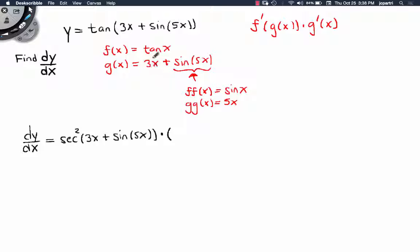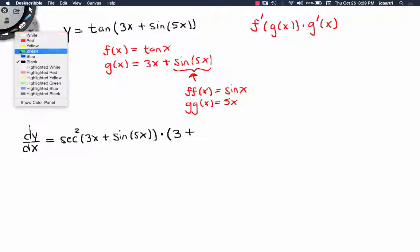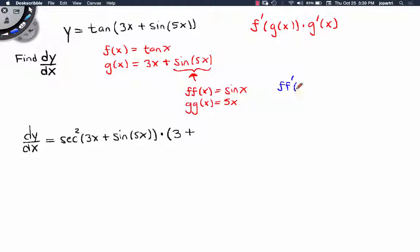Well, the derivative of 3x is fairly easy, it's just 3. Plus, now we have to use the chain rule here. So the chain rule here would say, let's use a new color, f'(g(x)) times g'(x).